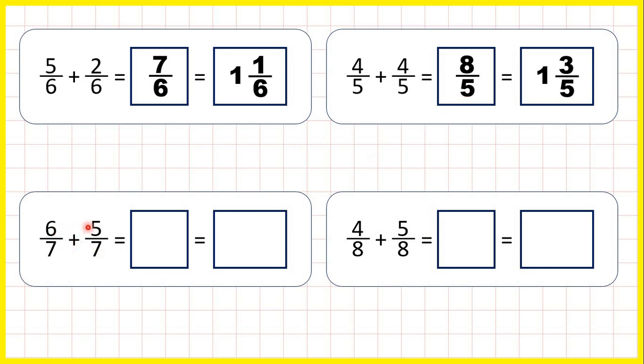Now 6 sevenths plus 5 sevenths. 6 plus 5 is 11, and the denominator stays the same, so we have 11 sevenths as our improper fraction.